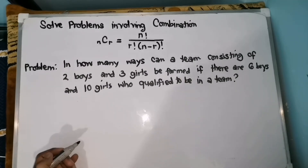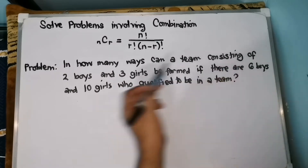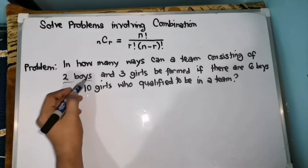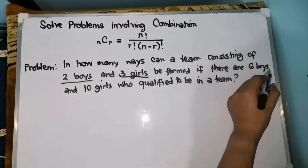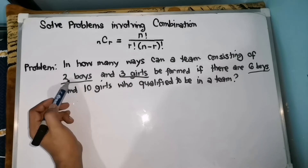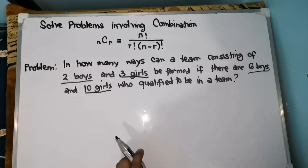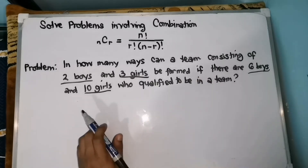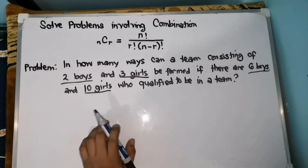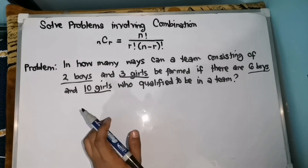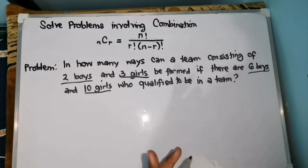Next problem: In how many ways can a team consisting of 2 boys and 3 girls be formed if there are 6 boys and 10 girls? We will select 2 out of 6 boys and 3 out of 10 girls who qualify to be in the team. This is an example of combination since the arrangement is not significant. The problem can be separated into 2 parts: the number of ways the boys can be chosen, and the number of ways the girls can be chosen.